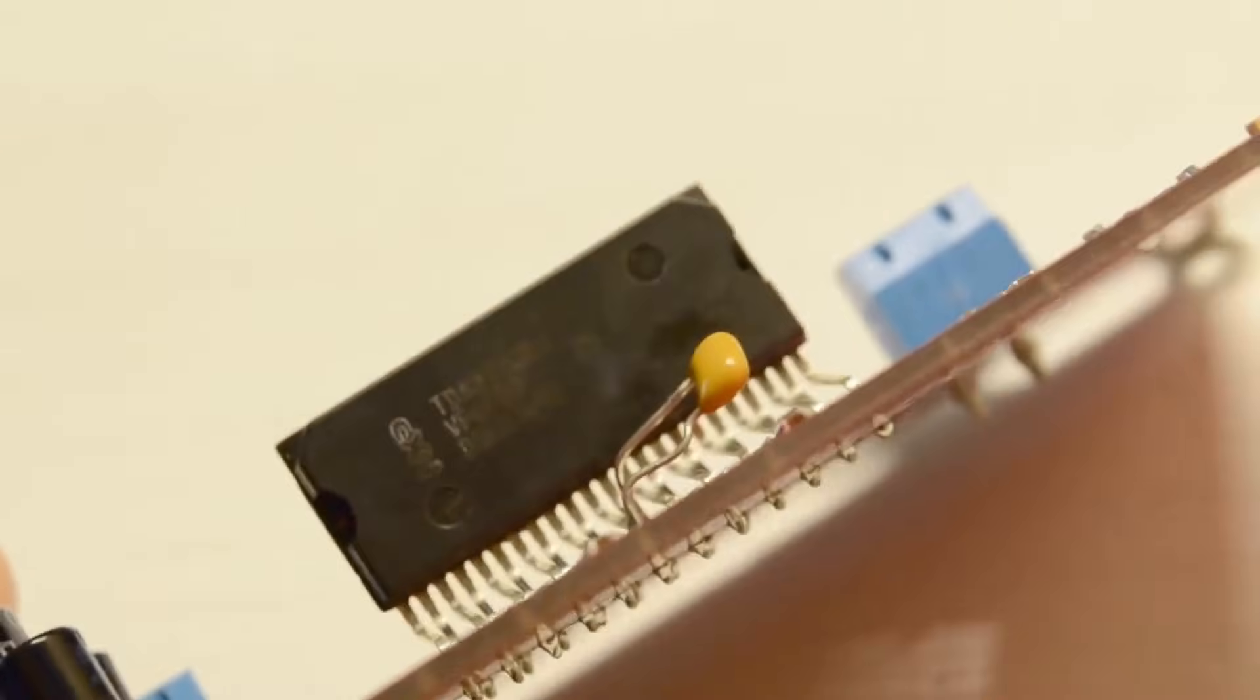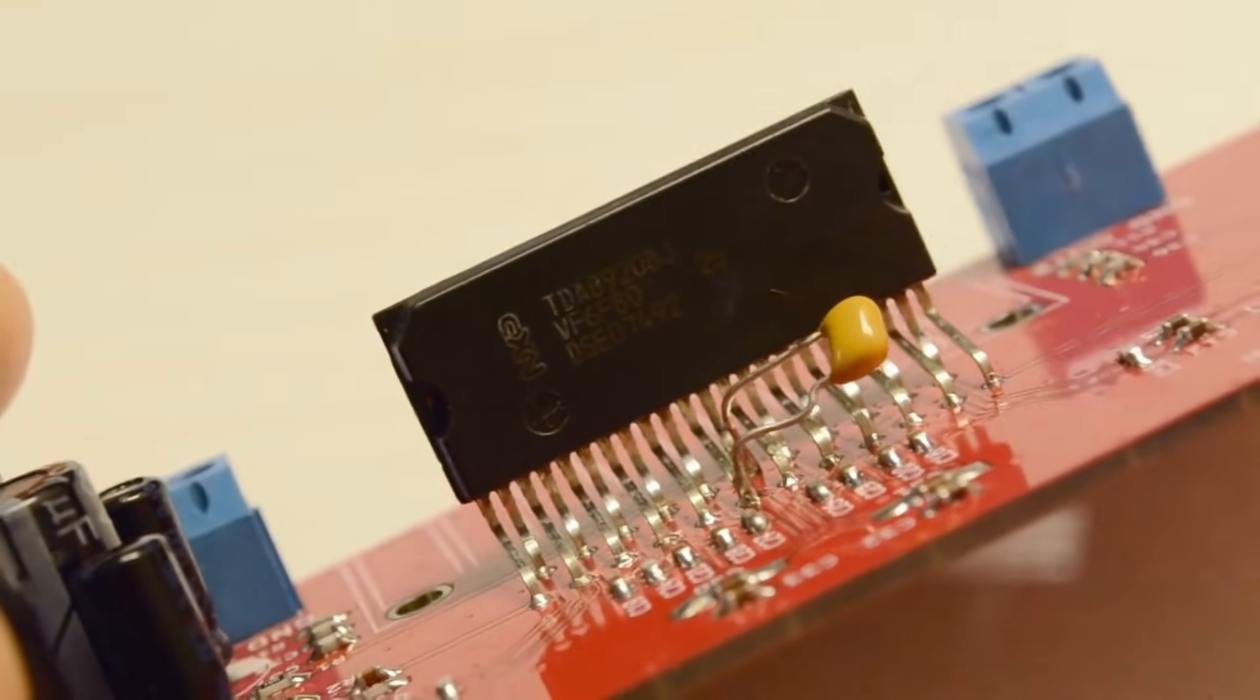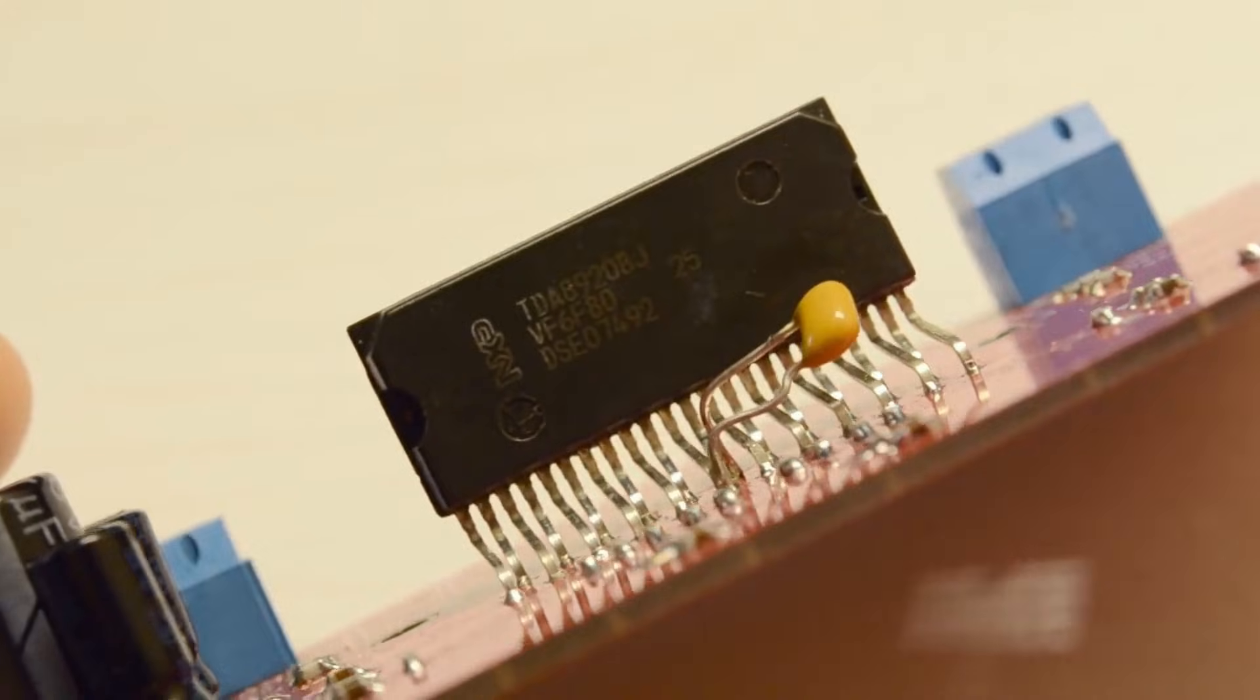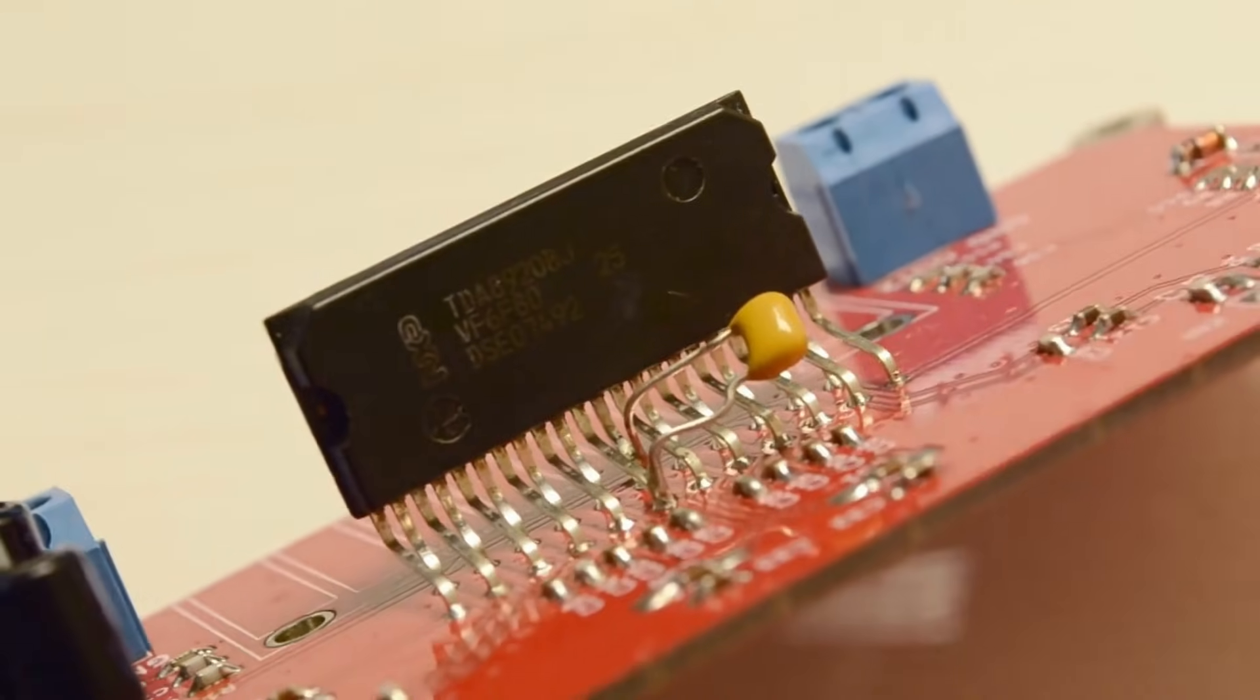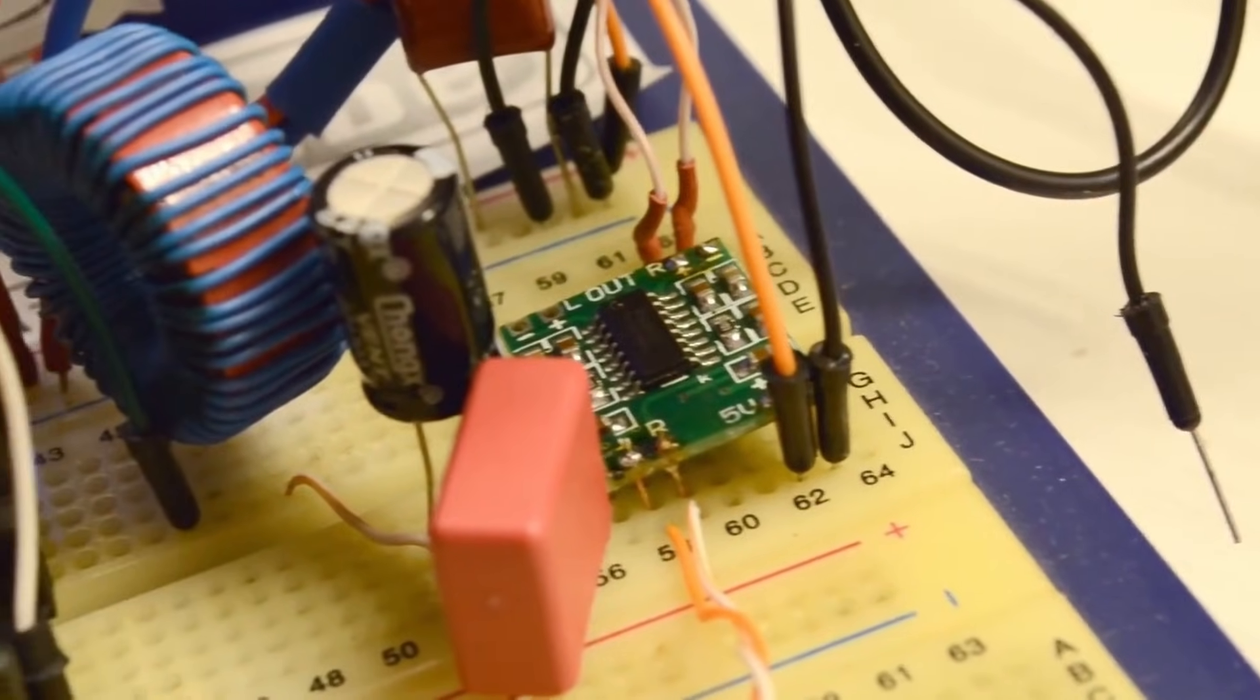But if you're assembling a simple device powered by 5 volts, and you just need it to play, it's easier to install an amplifier chip, class D, which already includes all of the above, or even a ready-made module, like the PAM8403 module.